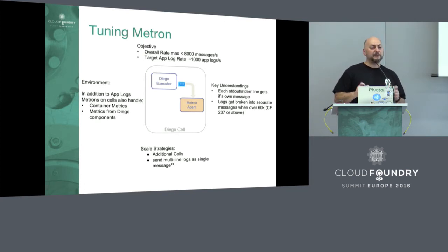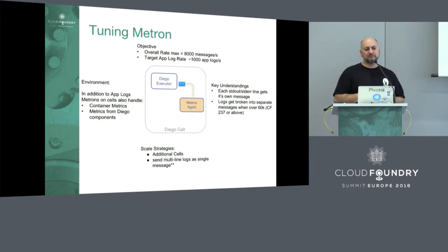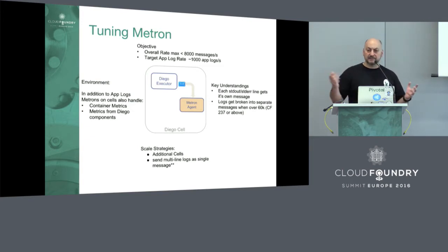Every single line within standard error or standard out gets its own message. One way to decrease message traffic is to trick the Diego cell into sending multi-line messages as one message package. If you're in about 1,000 app logs per second range within each Diego cell, you have some additional overhead to accommodate spikes. Also, every container per cell emits its container metrics every 30 seconds — that's also flowing through Metron. So that 1,000 log messages per second is really just a good baseline; you're probably sending about 2,000 messages per second at that rate anyway. We really ask you to look at Metrons — don't overflow them beyond that 8,000 point, otherwise you're going to start seeing loss beyond the 2.5% range.